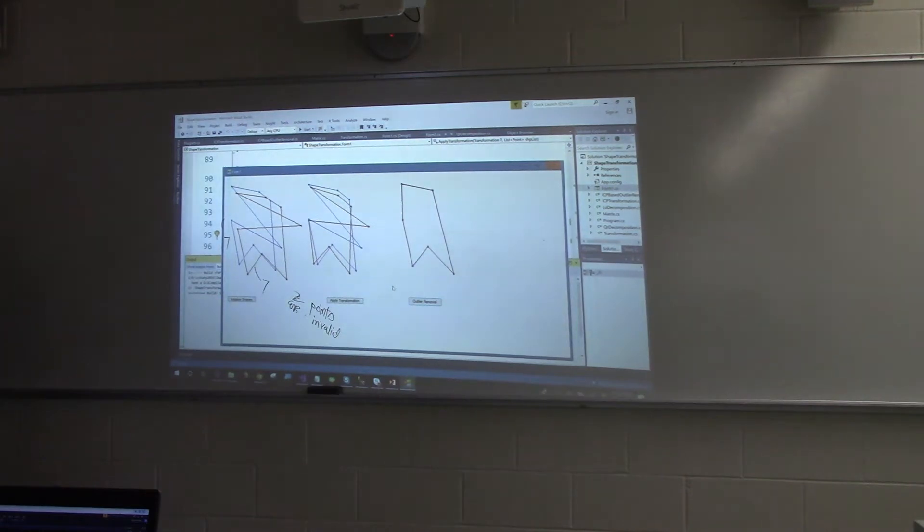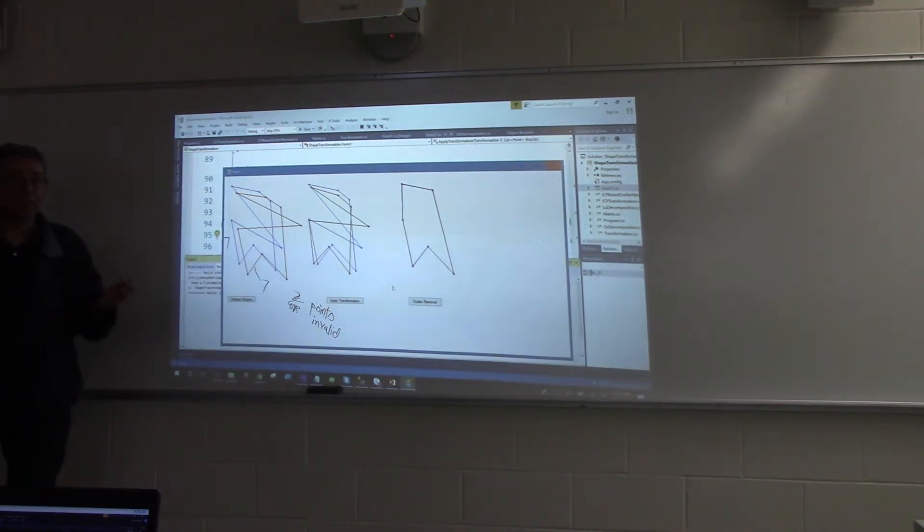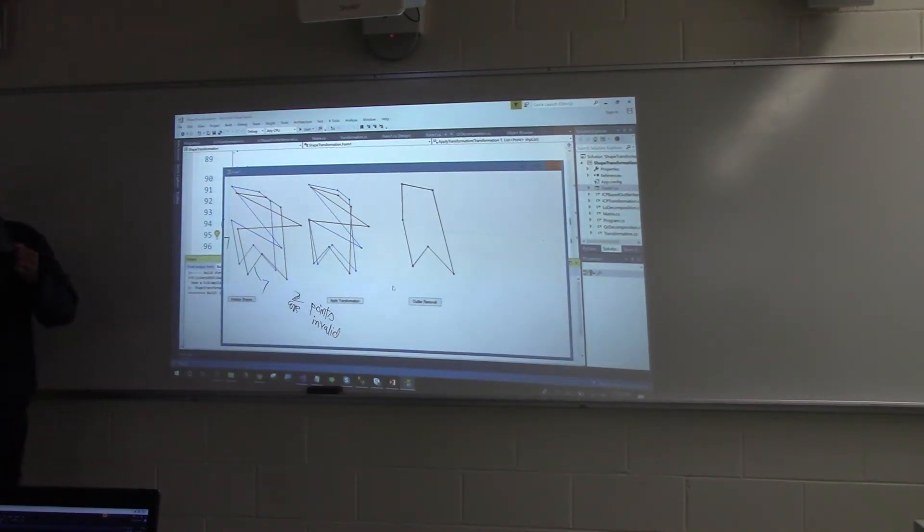So the question is, is this a good approach in general? If I have only seven points or ten points, you can go ten times in a loop. How many times do you have to compute the transformation matrix? Ten times, right? Each time you remove, you have to compute the transformation matrix again on the remaining points.